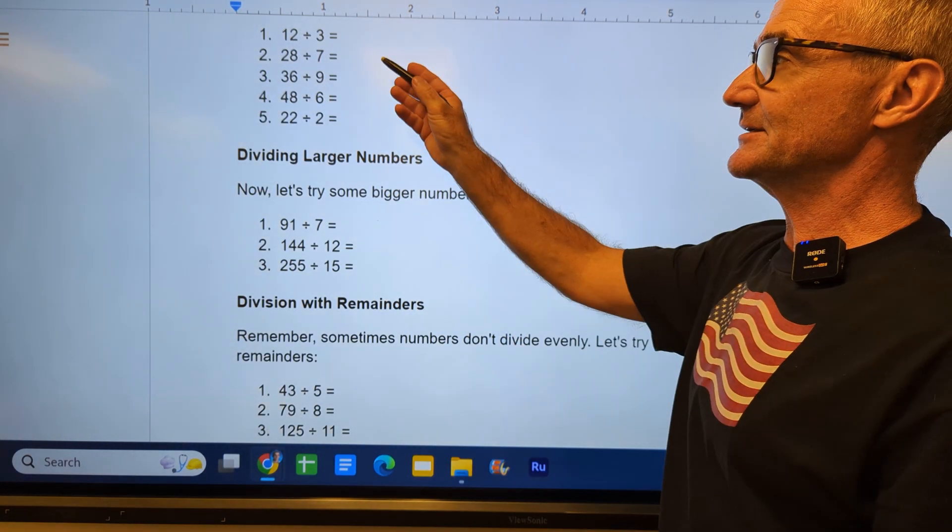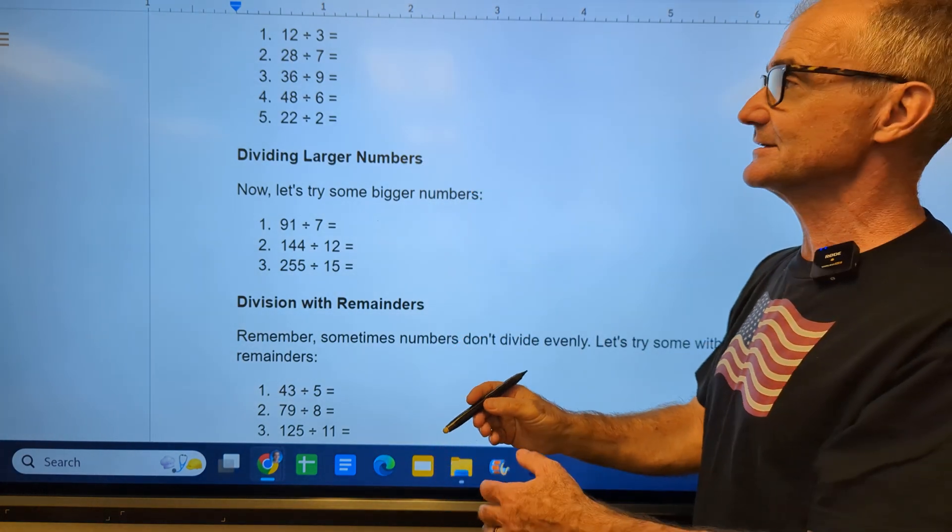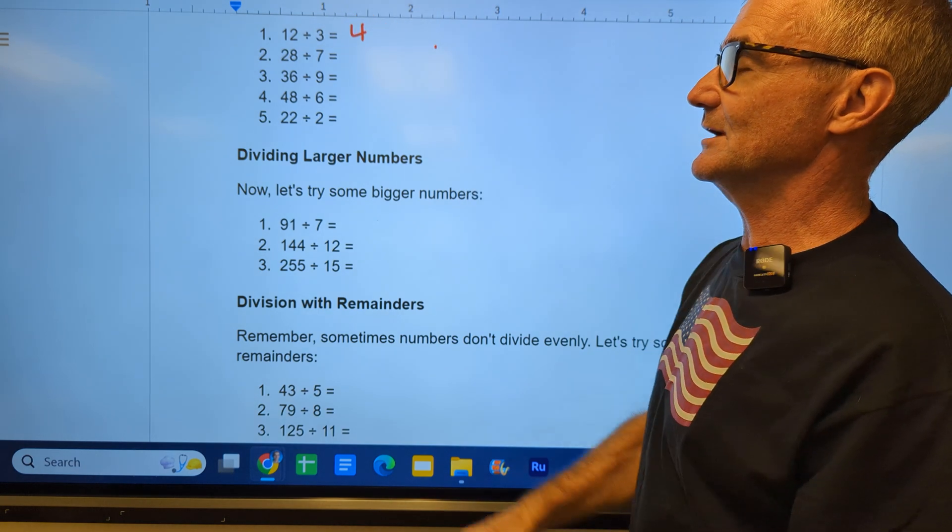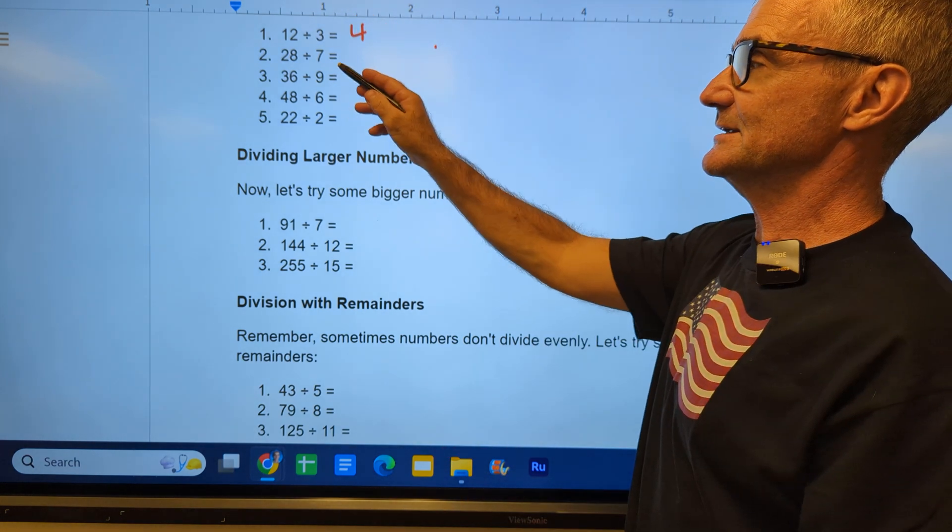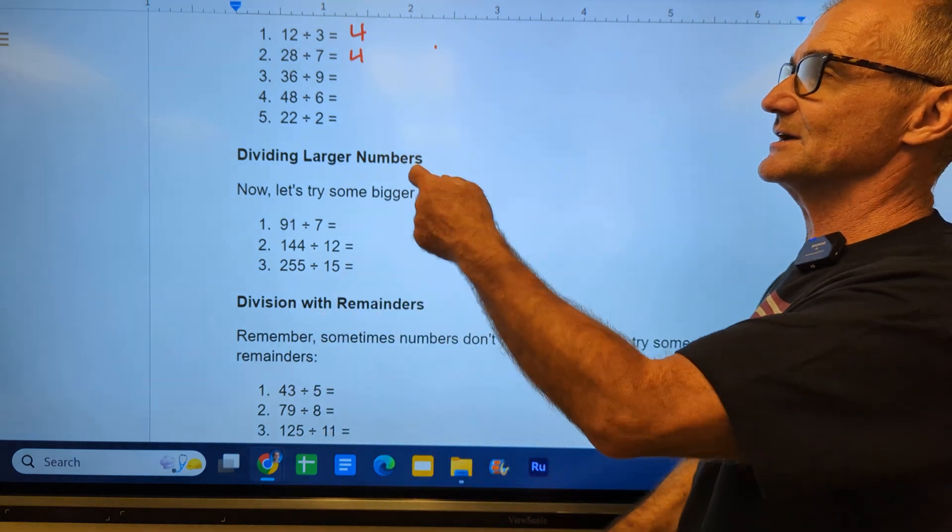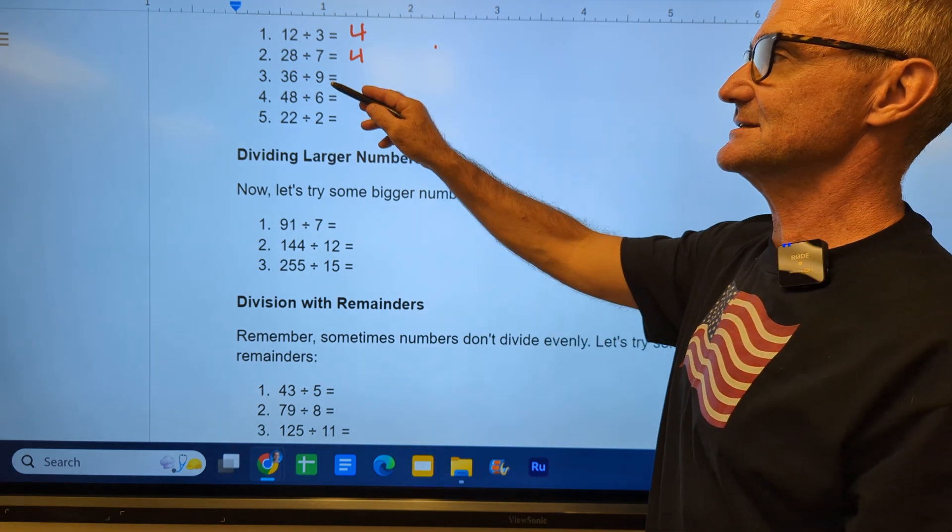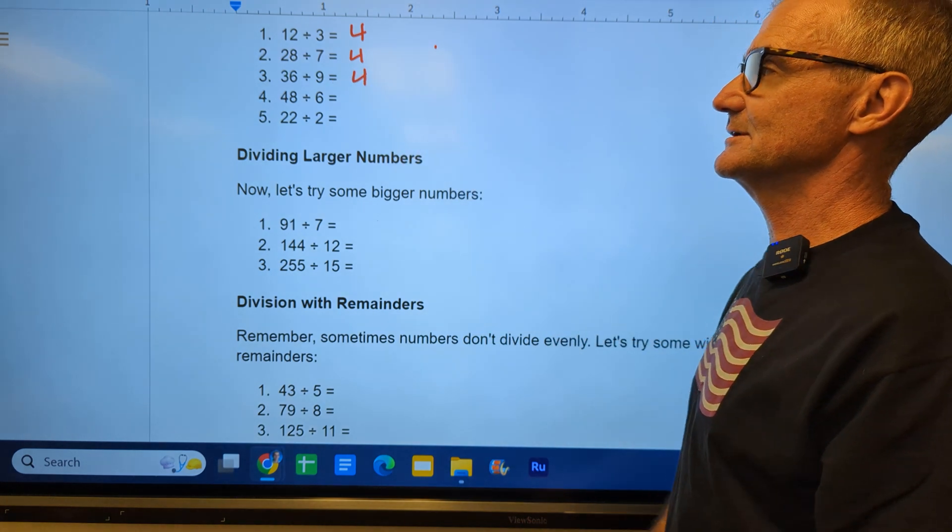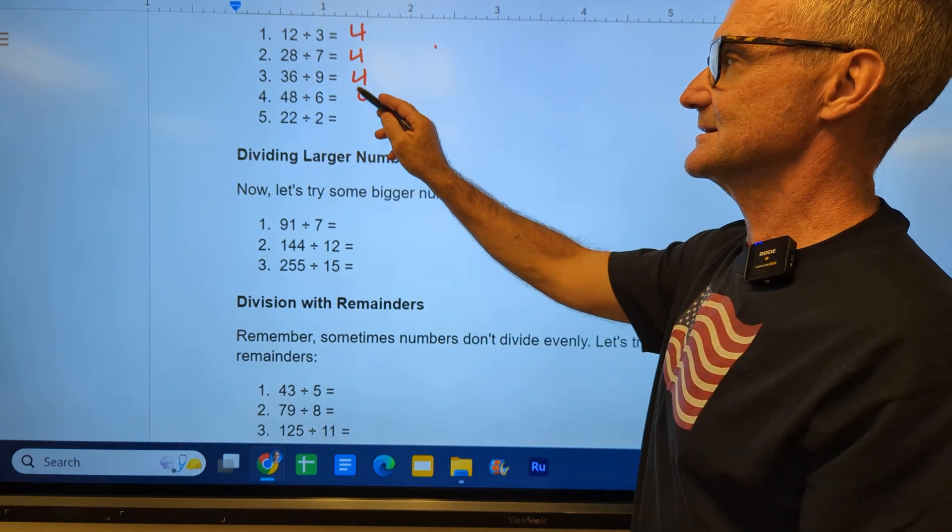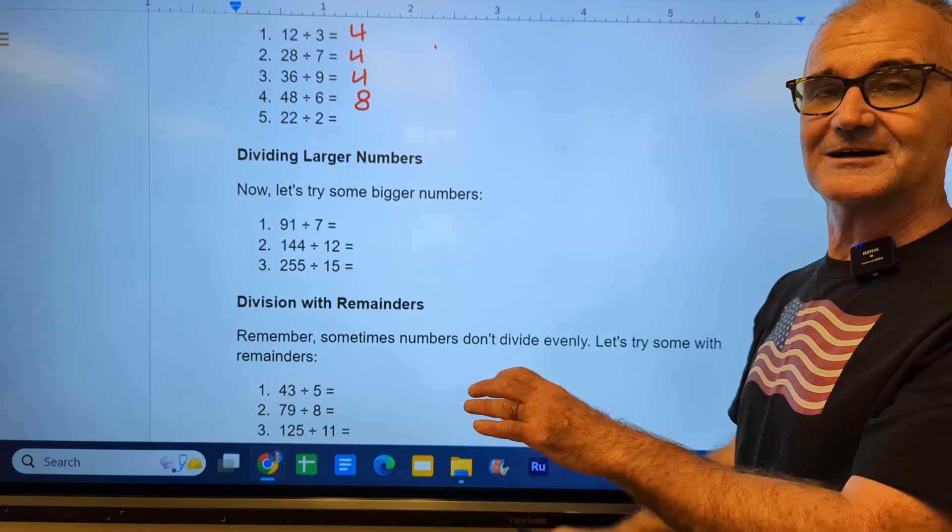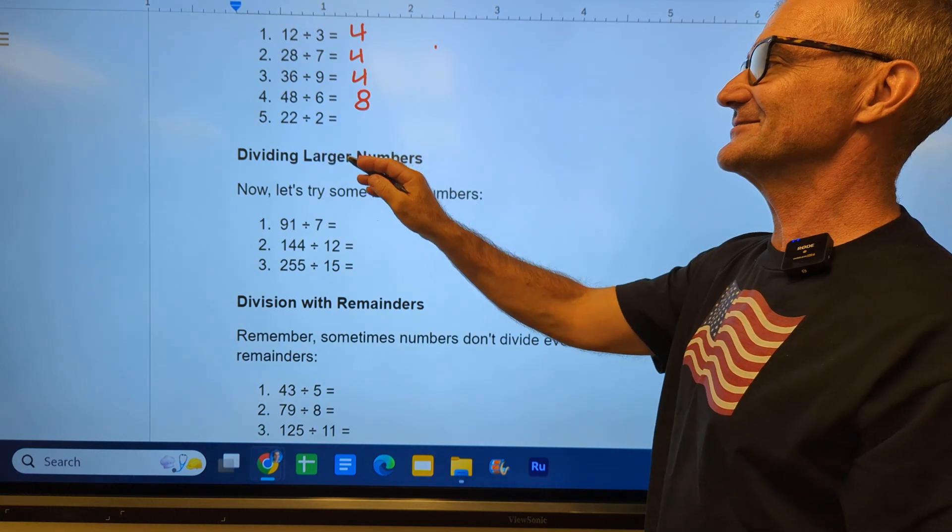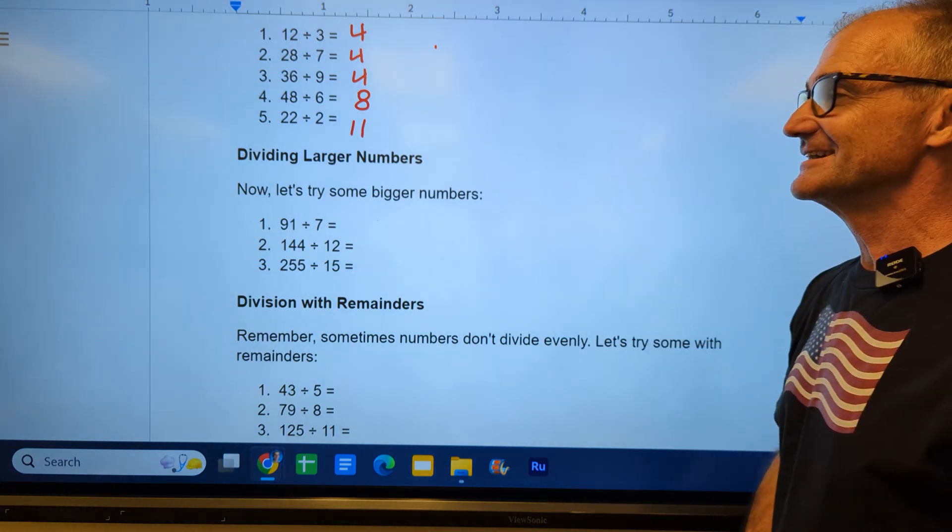Alright, let's do some practice division problems. 12 divided by 3. Pause the video and do these problems in your notebook. 12 divided by 3, well, 3 times 4 is 12. 28 divided by 7, 7 times 4 is 28. 36 divided by 9 is 4. 48 divided by 6 is 8. 22 divided by 2 is 11.